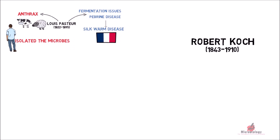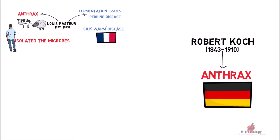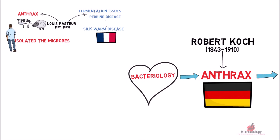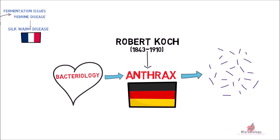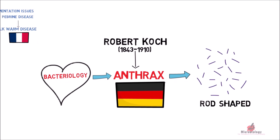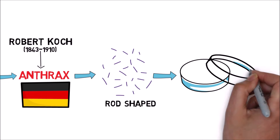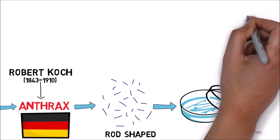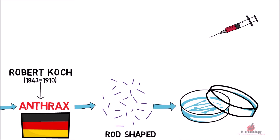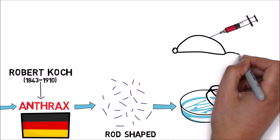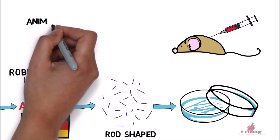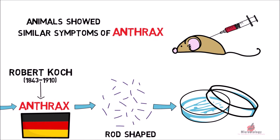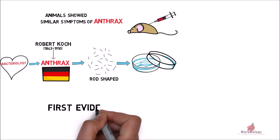Simultaneously, Robert Koch was also working on anthrax in Germany. Because of his interest in bacteriology, he continued to work on anthrax and discovered that the germs that cause anthrax are rod-shaped. He isolated these germs from the blood of animals that had died of anthrax. In his experiments, he inoculated the isolated germs into a healthy animal and observed that these animals developed similar symptoms of anthrax.